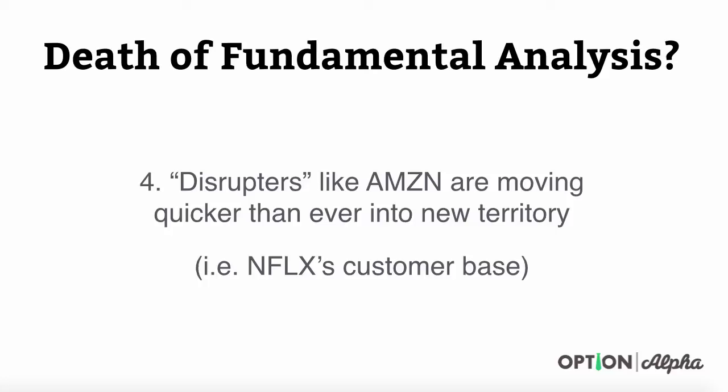Number four: disruptors like Amazon are moving quicker than ever into new territory. Netflix was one of the first movers into the space of offering digital streaming content. Well, Amazon had a huge subscriber base and quickly came in and took a huge chunk out of Netflix's customer base with Amazon Prime video streaming. In this day and age, markets and companies are so efficient that they can quickly overtake someone else's territory. Most people thought Netflix had the end-all in digital streaming media, but Amazon and other players like Redbox came in and disrupted the momentum. As a fundamental investor, those moves are hard to see coming.